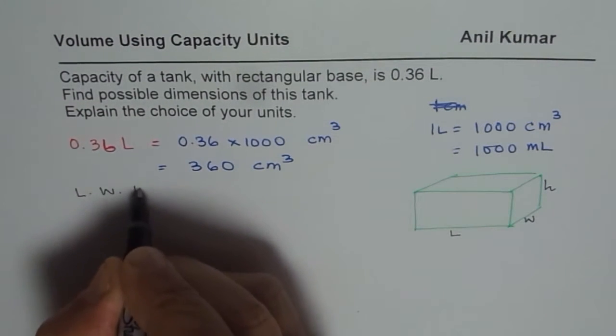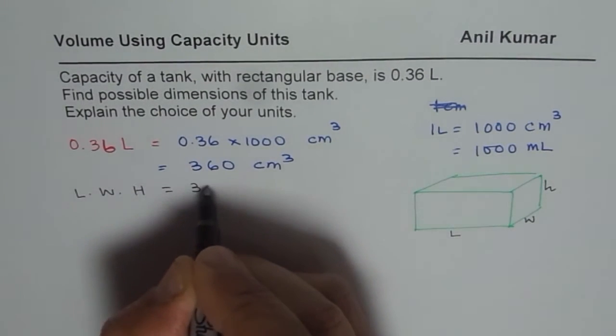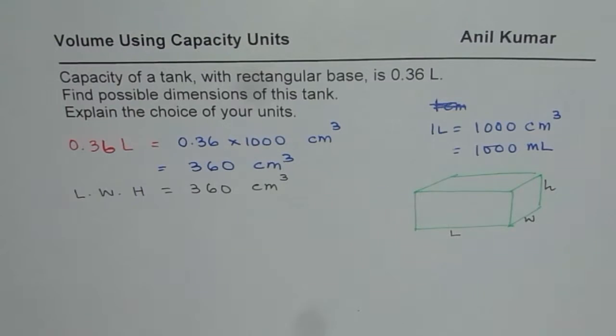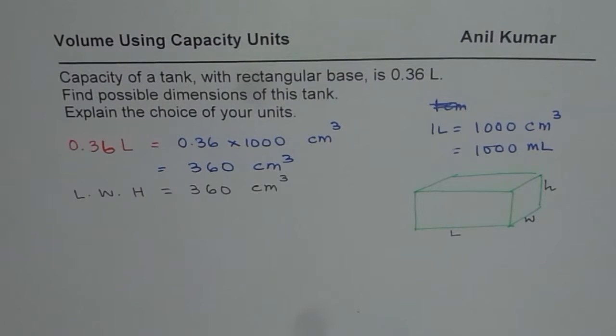So we need length times width times height is equal to 360 centimeter cube. So what combination gives us 360? That is what we are trying to explore.